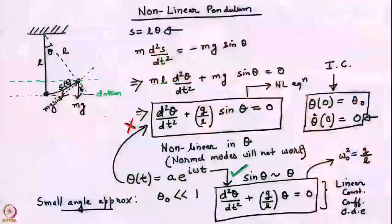We were looking at the non-linear pendulum. We had written down the equation of motion for the pendulum: d²θ/dt² + (g/L)sinθ = 0. We wanted to solve this equation subject to the initial conditions of an initial angular displacement and zero angular velocity, so θ(0) = θ₀ and θ̇(0) = 0.